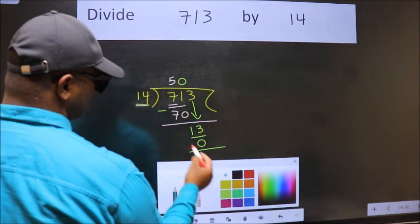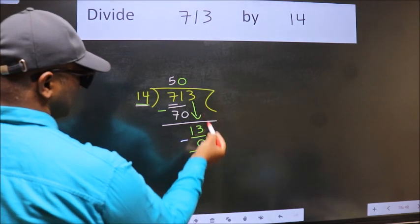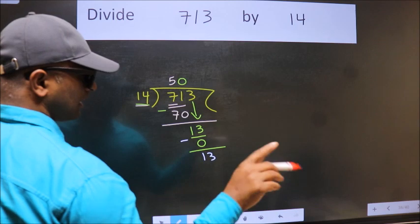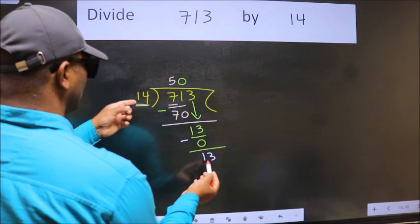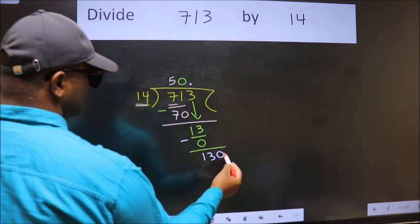Now we subtract. We get 13. Over here we did not bring any number down. And 13 is smaller than 14. So now we can put dot and take 0.